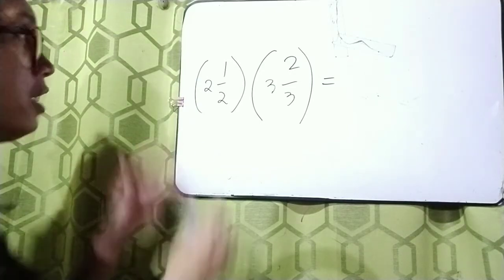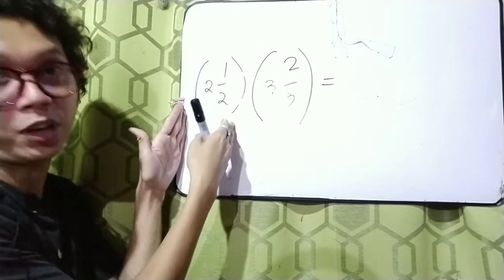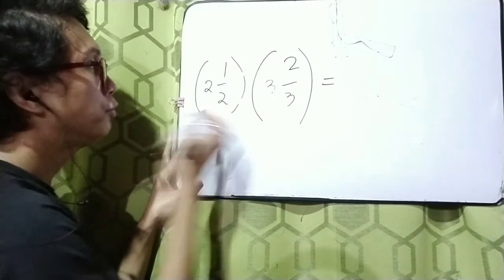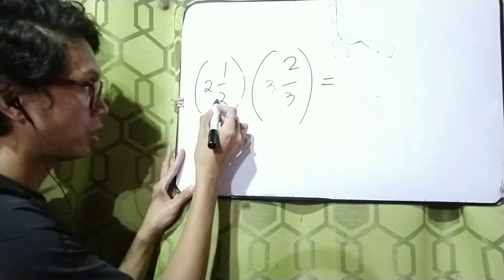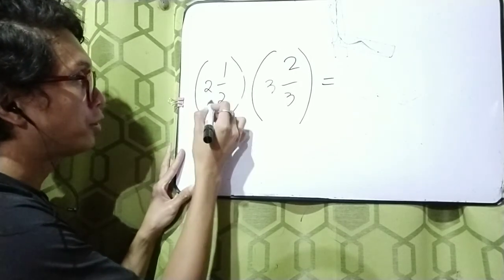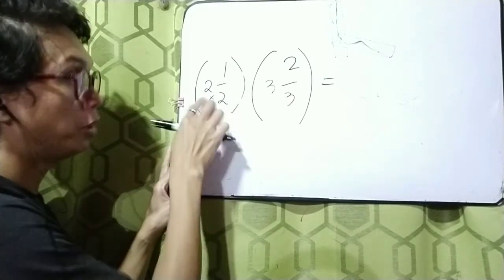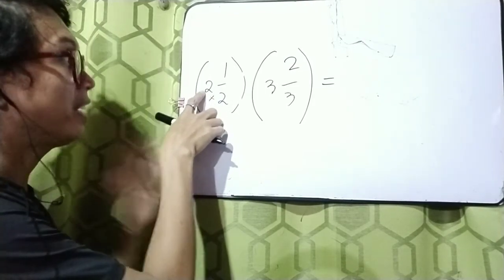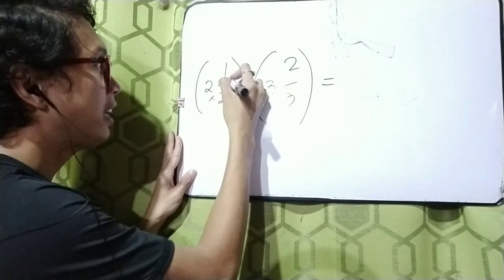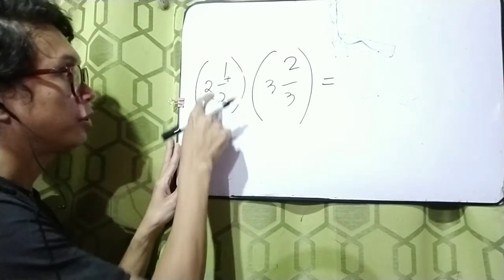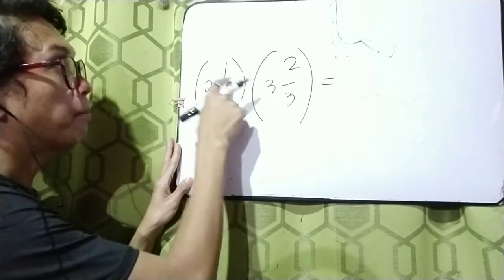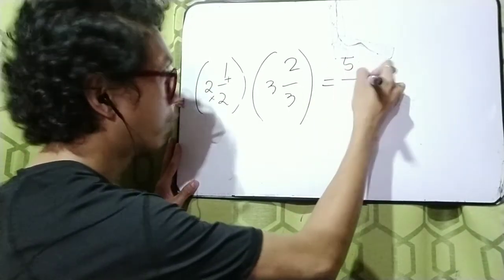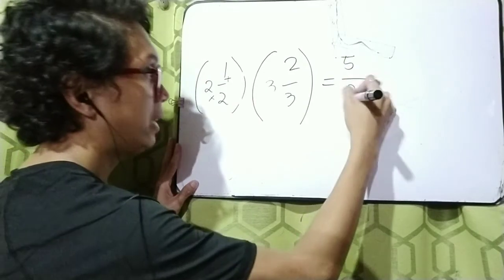So how are we going to change them? Let's focus on the first fraction, 2 and a half. To change this mixed number to an improper fraction, multiply the denominator by the whole number: 2 times 2 is 4. Then add the numerator: 4 plus 1 equals 5. So we get 5 over 2 — just copy the denominator.